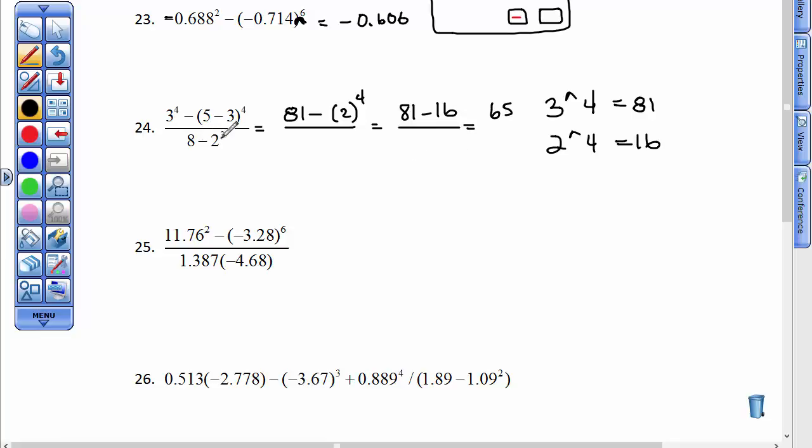Downstairs, however, 8 minus 2 to the 3rd power, I need to do the exponents first. So 2 to the 3rd power is 8, because it's 2 times 2 times 2. Well, 8 minus 8 is 0. And whenever you take a number and try to divide it by 0, you have to say that that's undefined. So that one's kind of an unusual one.